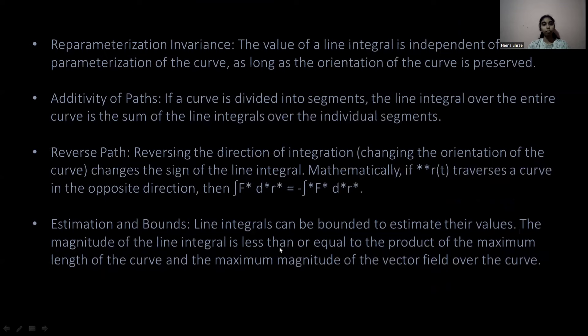The third property is reparametrization invariance: the value of a line integral is independent of the parametrization of the curve, as long as the orientation of the curve is preserved. The fourth property is additivity of paths: if a curve is divided into segments, the line integral over the entire curve is the sum of line integrals over the individual segments.